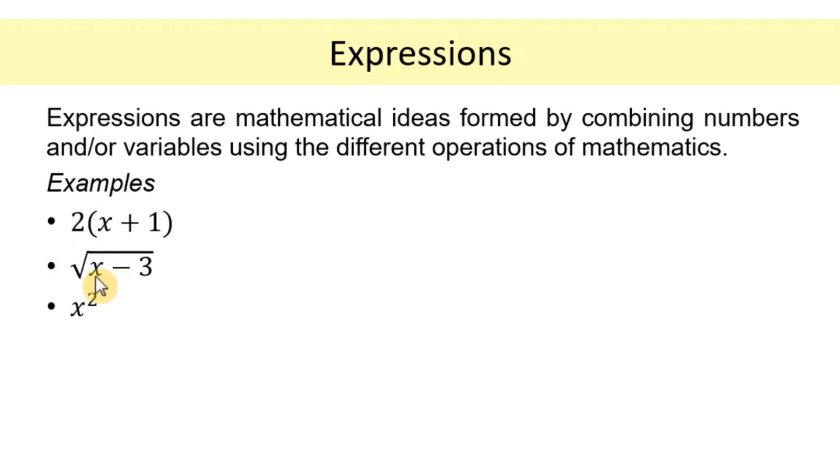Another expression, we have an unknown number x. We subtract 3. The difference, we take the square root. So it involves two operations, subtraction and taking the square root. Also with the first one, it involves two operations, addition and multiplication. The third expression, we have x squared. It is expressing that a number is being squared.